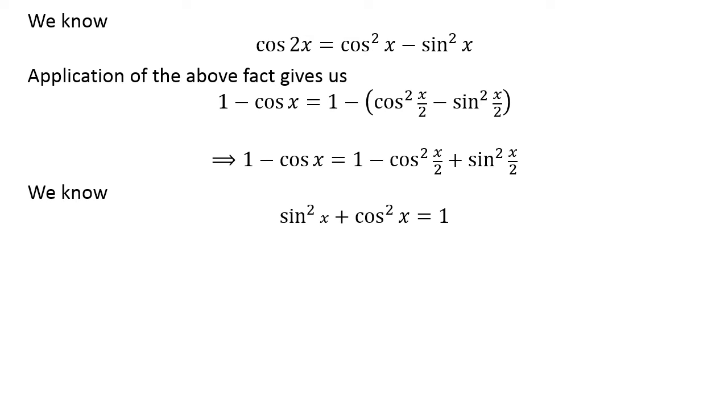Again, we know the famous identity square of sine of x plus square of cosine of x is equal to 1.